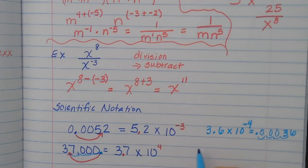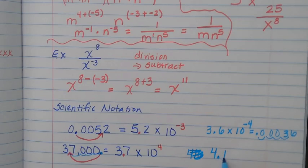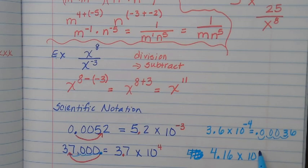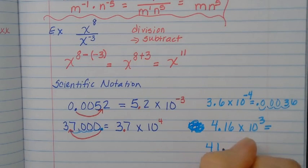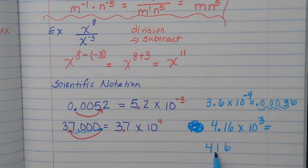So what if I have something like 4.16 times 10 to the third? That's scientific notation because the decimal is right after the first number. To expand it: we have an exponent of 3, so we move the decimal to the right 3 places — 1, 2, 3 — giving us 4,160.